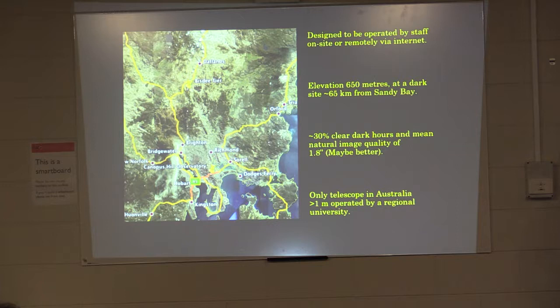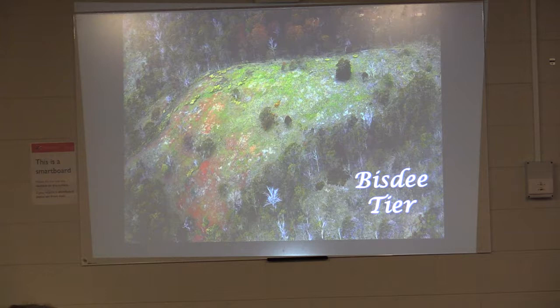One of the things to highlight is that this is the only telescope in Australia outside of Siding Spring Observatory in New South Wales, larger than a meter, operated by kind of a regional university. It makes the university quite proud to have this facility. It would be nice if they supported it with a bit more cash, but that's maybe something to work on in the future. The university now runs a radio telescope network, which has dishes right the way across Australia. It's the only university in the world to run a fully functioning network of radio telescopes. And we also have this very nice 1.3 meter optical telescope as well.